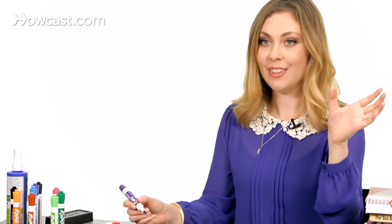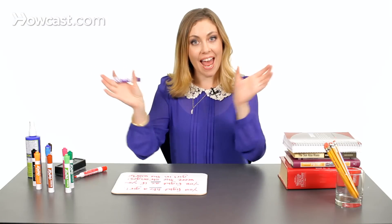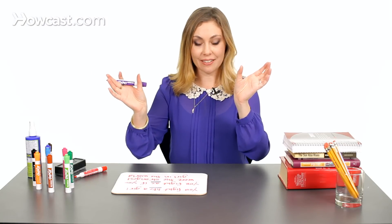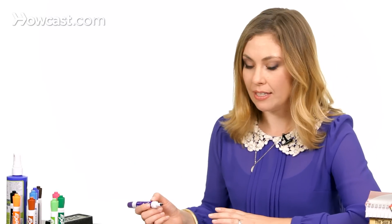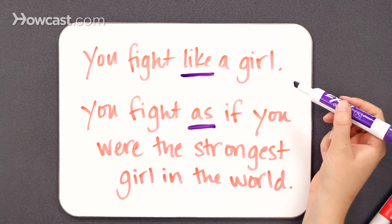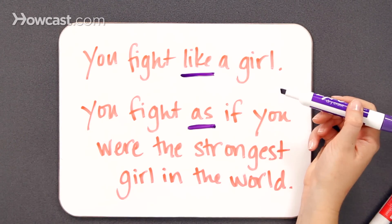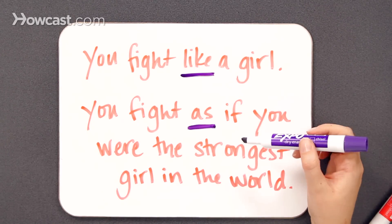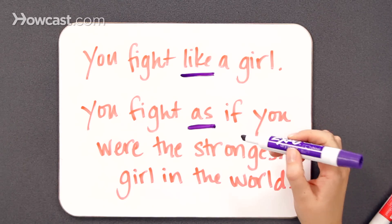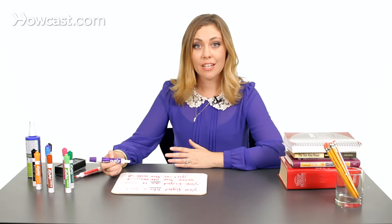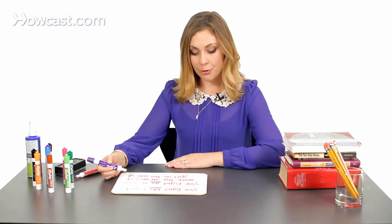On one hand we have the fighter we're talking about, and on the other hand we have the strongest girl in the world, and as kind of links those two ideas. One way you can spot this in a sentence is to remember that like is usually followed by a really simple phrase without a verb. Here you can see 'you fight like a girl' — all we get after the word like is 'a girl,' there's no verb. With the word as, it's often followed by a more complex phrase that includes a verb.